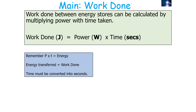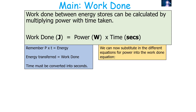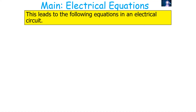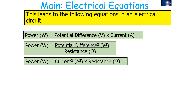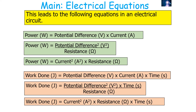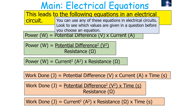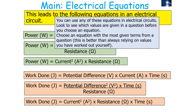Substituting the different equations for power into the work done equation gives us: W = VIt, or W = V²t/R, or W = I²Rt. You can use any of these equations in an electrical circuit — just check which values are given before choosing. It is best to choose an equation using the most given terms from the question rather than relying on values you've calculated yourself in previous parts.